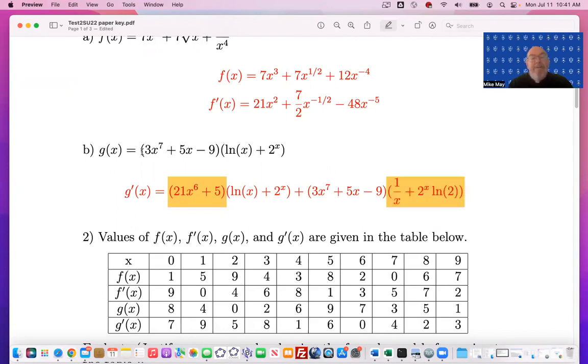And we see the derivative of the first is 21x to the sixth plus five, and the derivative of the second is one over x times two to the x times element of x. And so we have these terms times the appropriate parts.